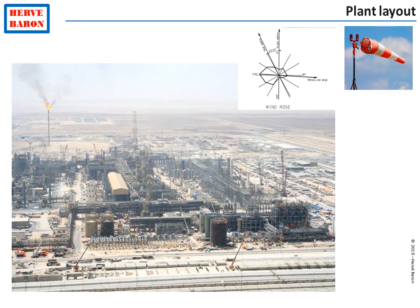The wind direction has a large influence on the layout of a facility. A gas cloud originating from a leak source would develop towards the direction it is blown by the wind, and it must not be allowed to reach an ignition source. Therefore, ignition sources must be located upwind of possible leak sources, i.e., process units and storage areas. Unavoidable ignition sources include fired equipment such as furnaces, flares, and electrical substations.